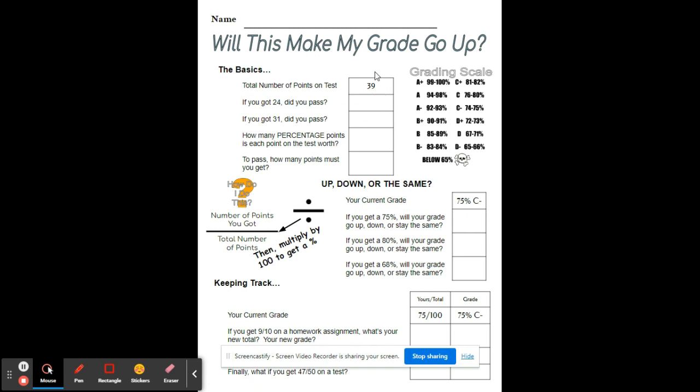let's look up here. The test is worth 39 points. If you got a 24%, or I'm sorry, not a 24%, if you got 24 points, you take 24 divided by 39 and then you multiply it by 100 and that will give you your percent. Then, whatever percent you get, you look at your grading scale over here and see if it is above a 65%. If it's 65% or above, you passed.